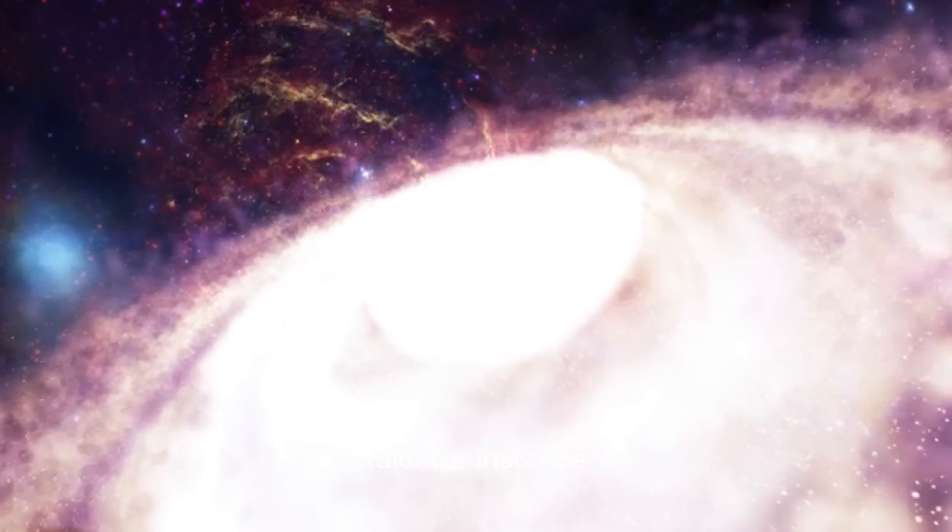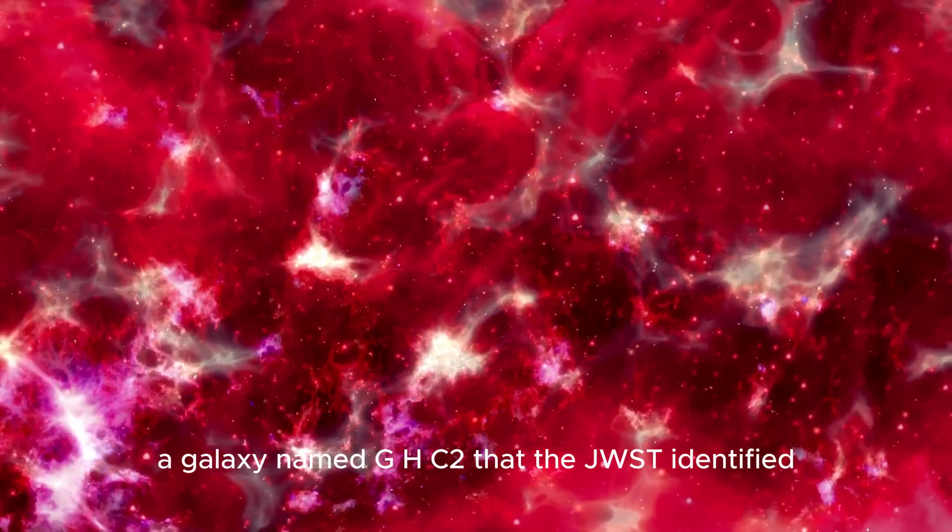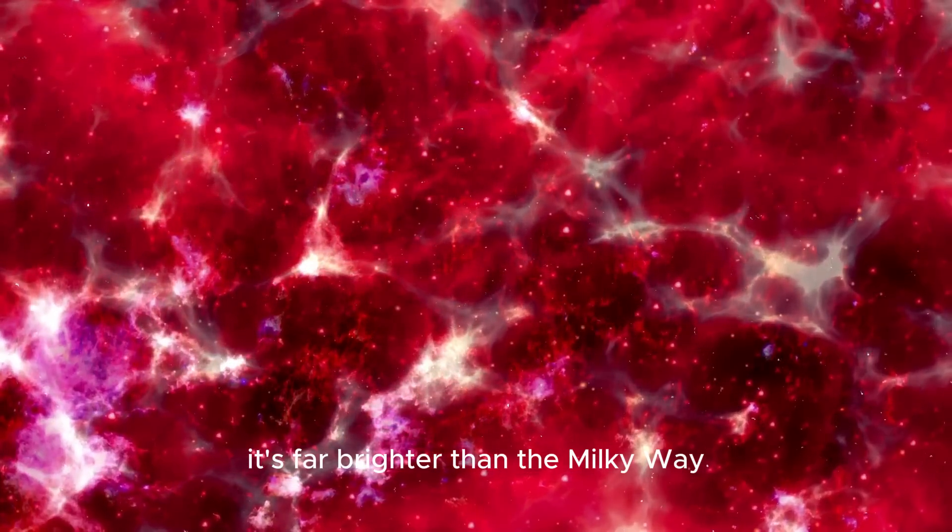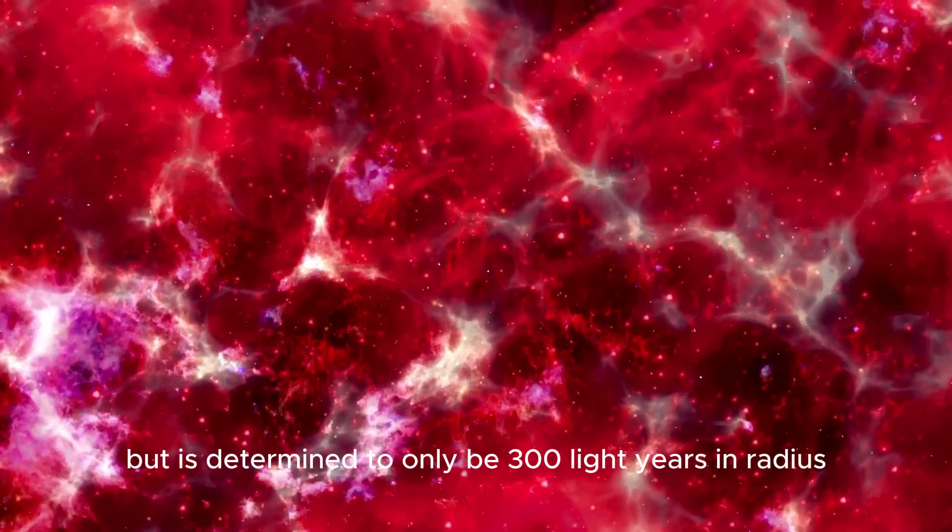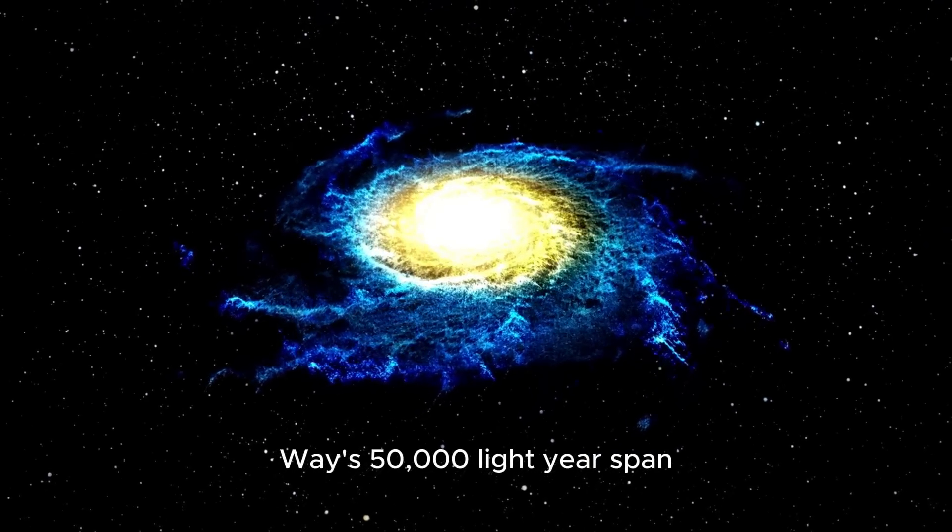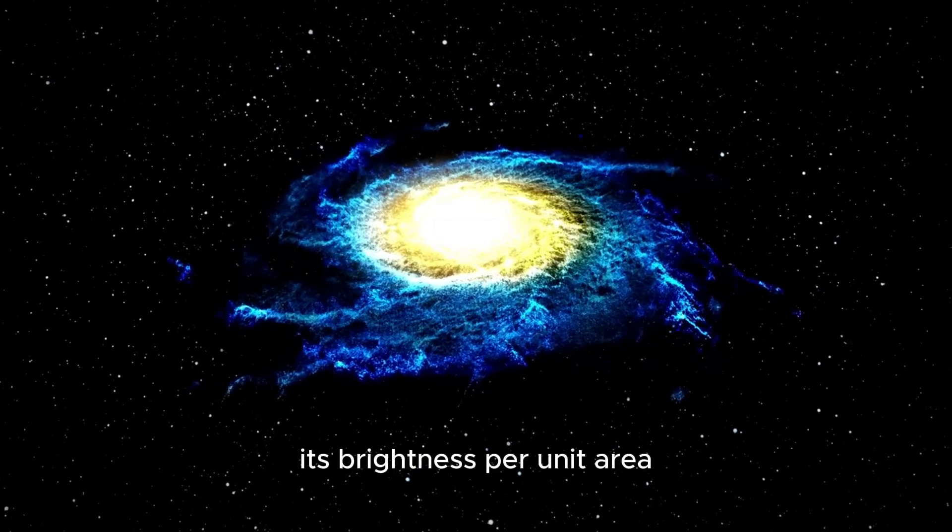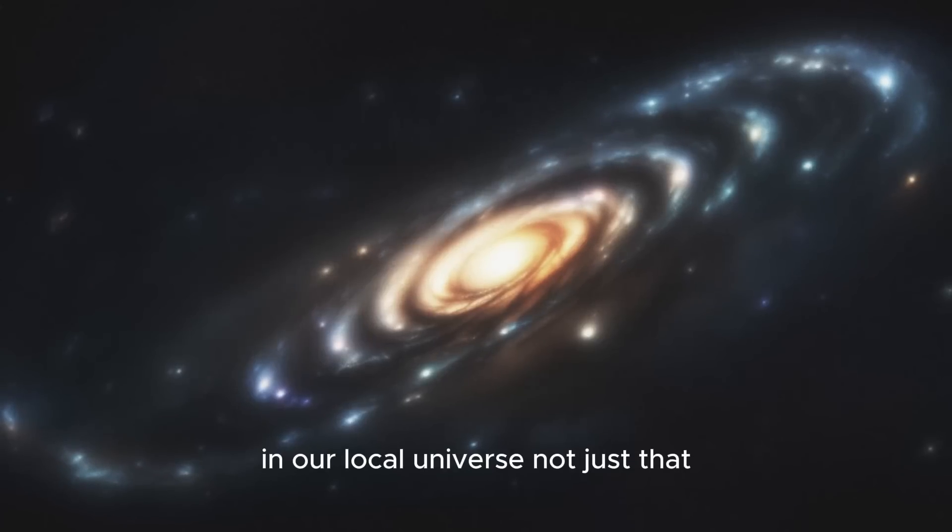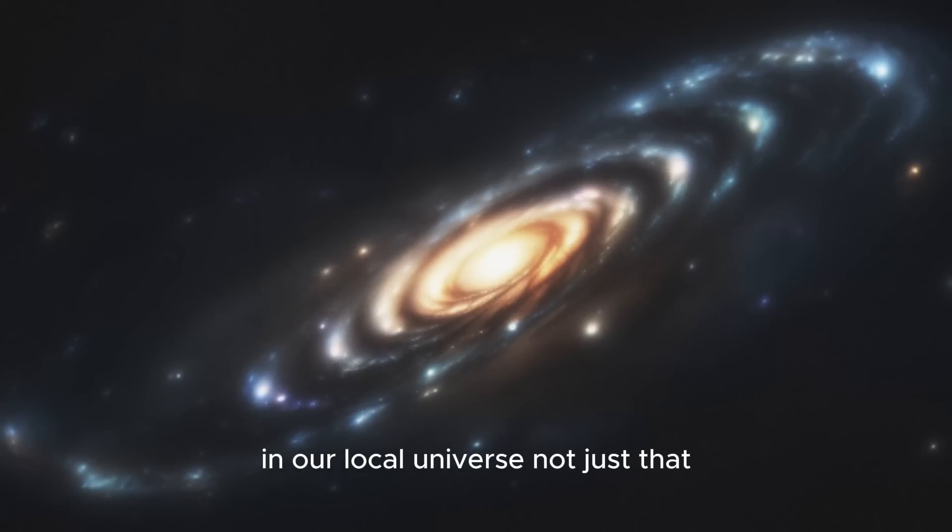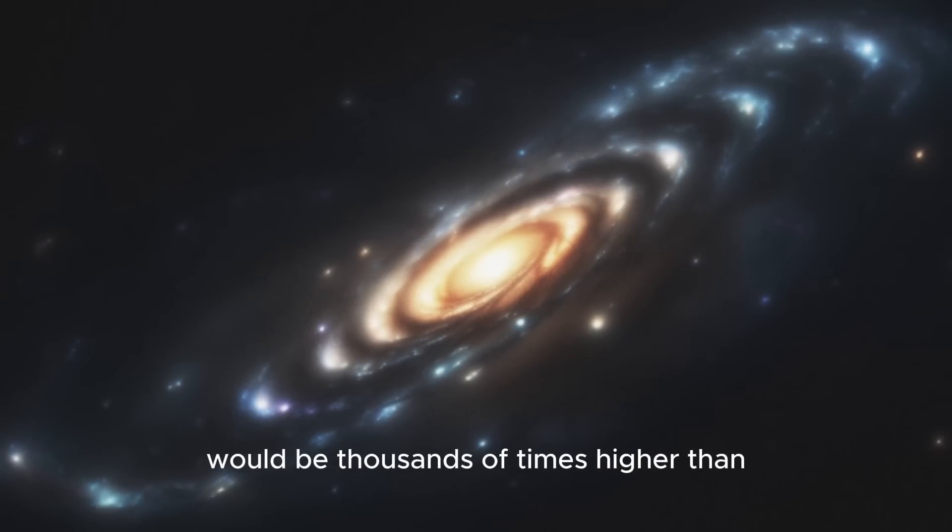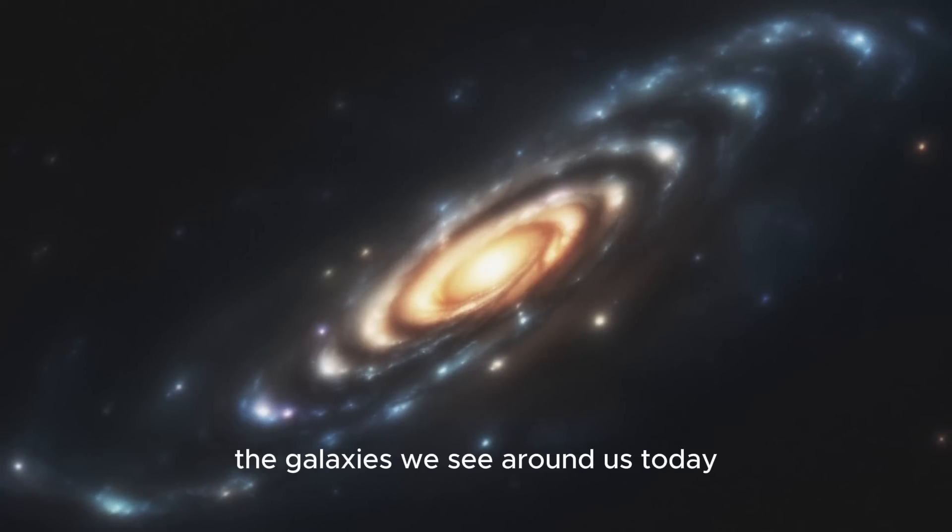Take, for instance, a galaxy named GHC2 that the JWST identified. It's far brighter than the Milky Way but is determined to only be 300 light-years in radius. Compare that with the Milky Way's 50,000 light-year span. Its brightness per unit area would be multiple times that of the brightest galaxy in our local universe. Not just that, its density and that of several other new galaxies would be thousands of times higher than the galaxies we see around us today.